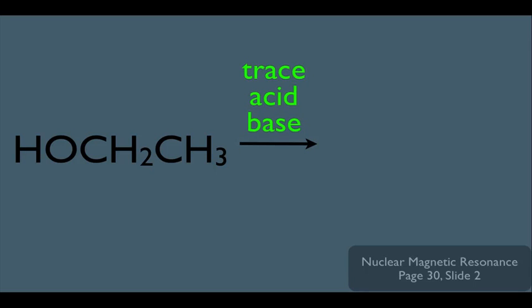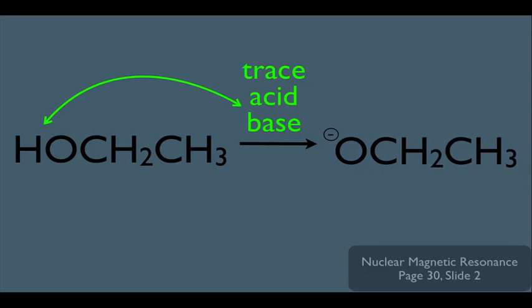Let's talk about what would happen if there were a trace amount of base in our solvent with our alcohol. Remember, OH hydrogens are slightly acidic, so it's possible that a base could rip off the hydrogen on the alcohol. If it does do that, then we end up with this as a result. However, remember, this type of acid-base reaction is reversible, which means what's actually happening is that this reaction is going back and forth. This is what's called proton exchange.